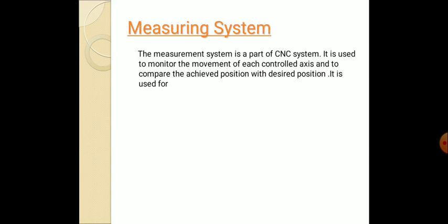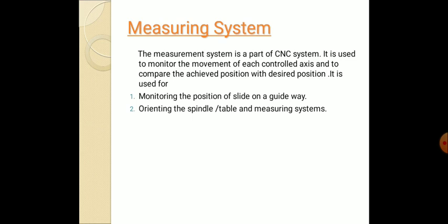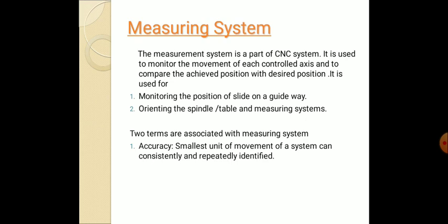This is the measuring system. Next is the measuring system. What is this measuring system? The measurement system is a part of a CNC system. It is used to monitor the movement of each controlled axis and to compare the achieved position with the desired positions. It is used to monitor the position of the slides on the guideways and by orienting the spindle or table.